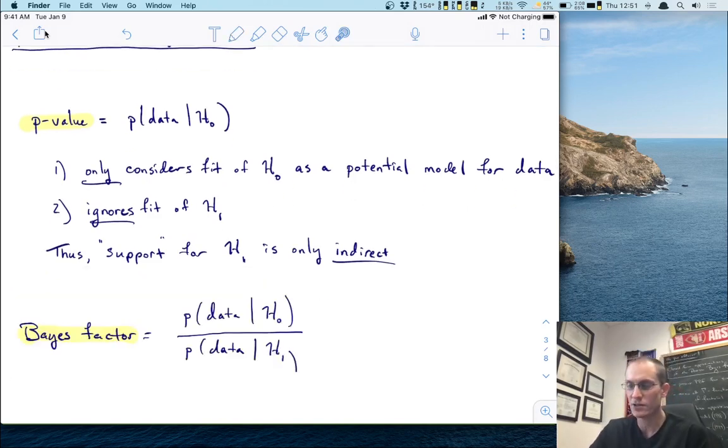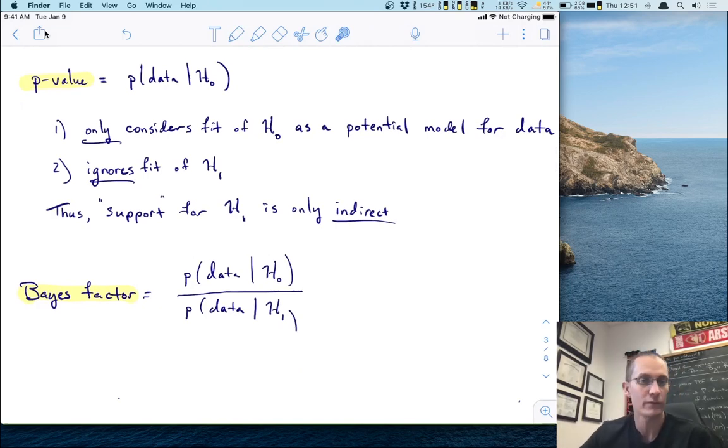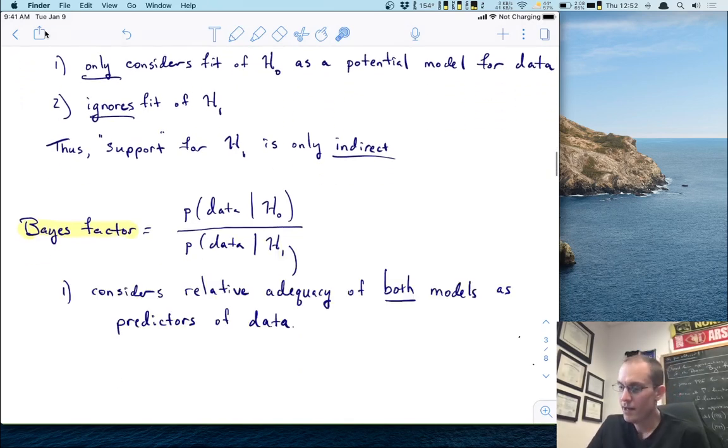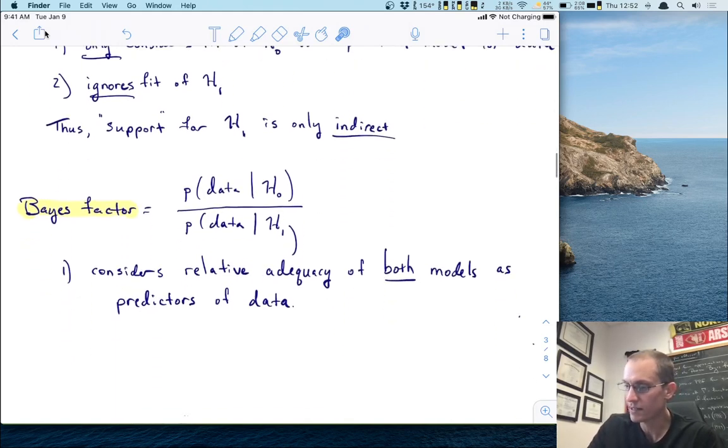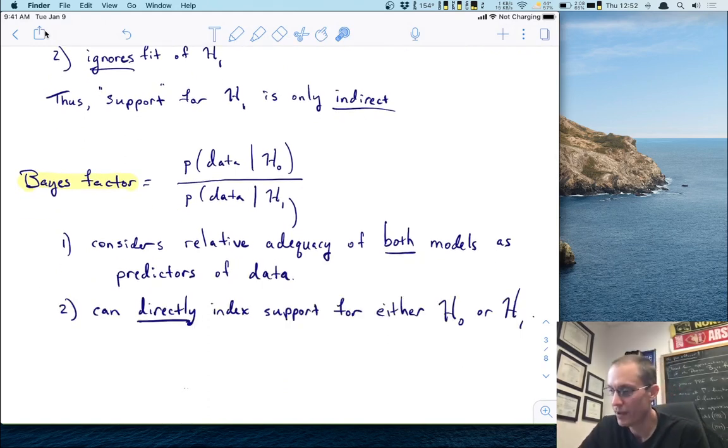Let's look on the other hand at the Bayes factor. So let's recall the definition of the Bayes factor. It's a relative likelihood. It considers the relative adequacy of both models as predictors of data, whereas the p value only looks at the null. The Bayes factor looks at both of the null and the alternative as potential predictors of the data. And thus, this allows us to directly index support for either model, either h0 or h1. That's really cool because frequentist inference, you can't get evidence for h0. You can only ever reject it. So it only works one way. And when it doesn't work, it just doesn't work for anything. Whereas with Bayes factors and using Bayesian inference, I can directly index support for either. It's kind of nice.